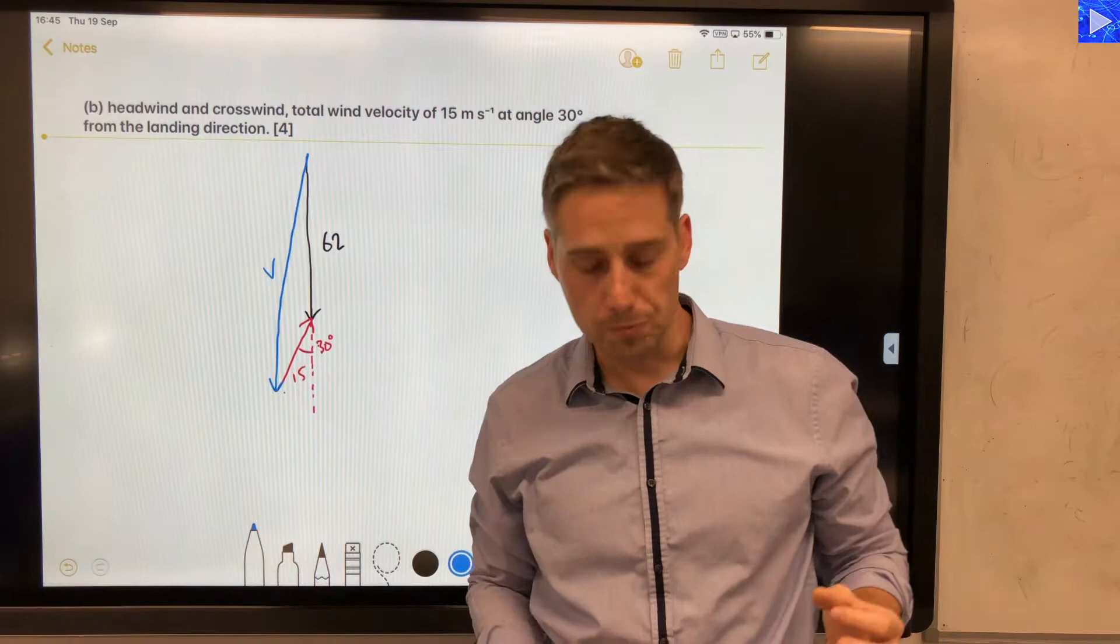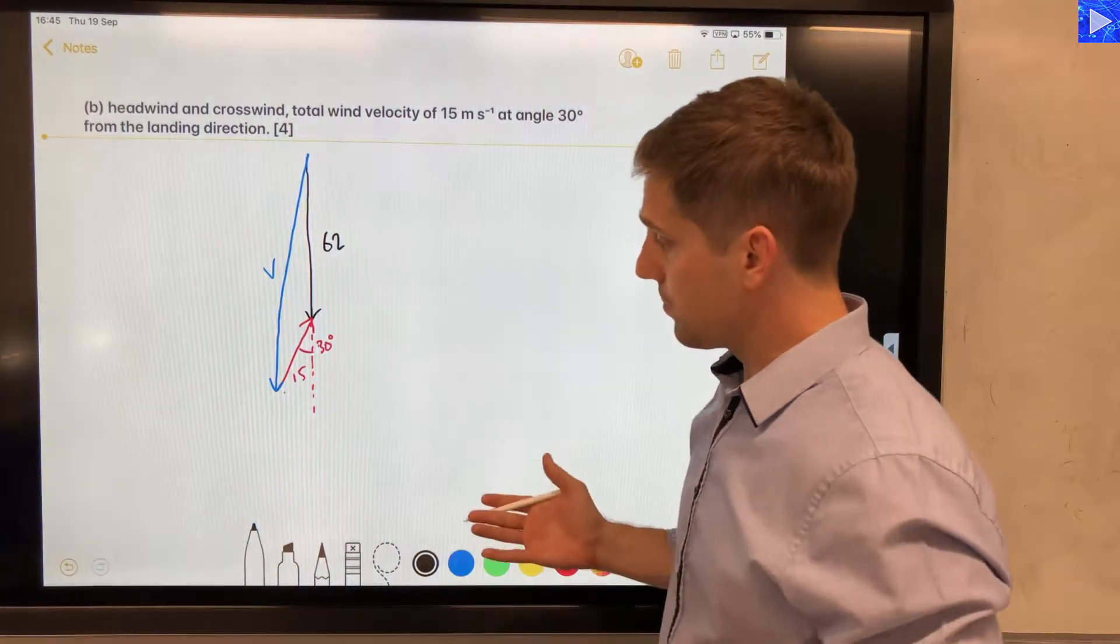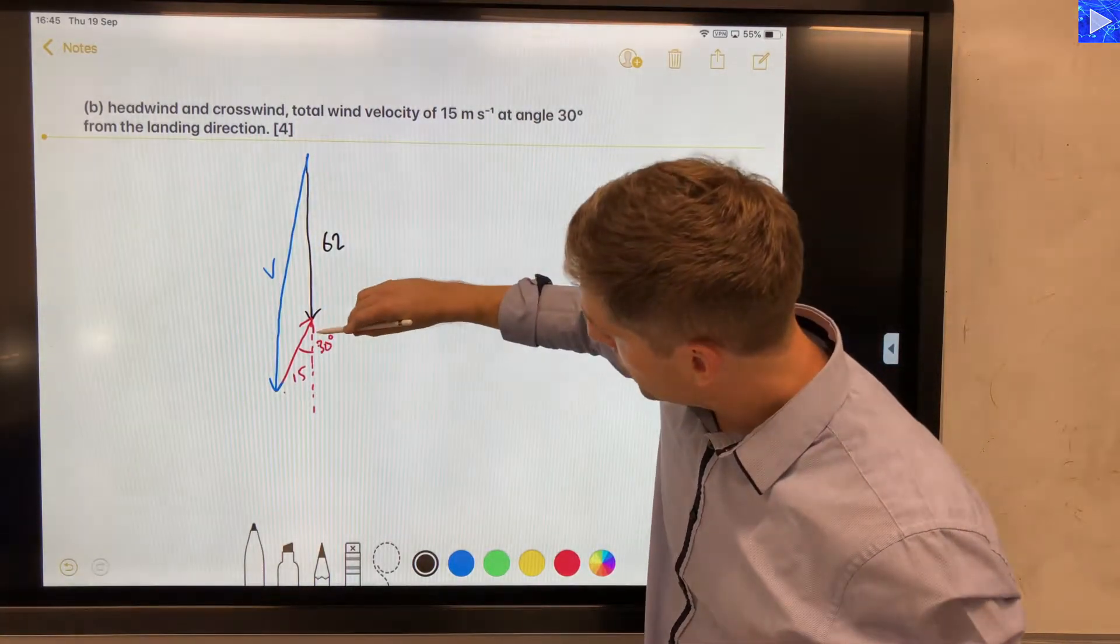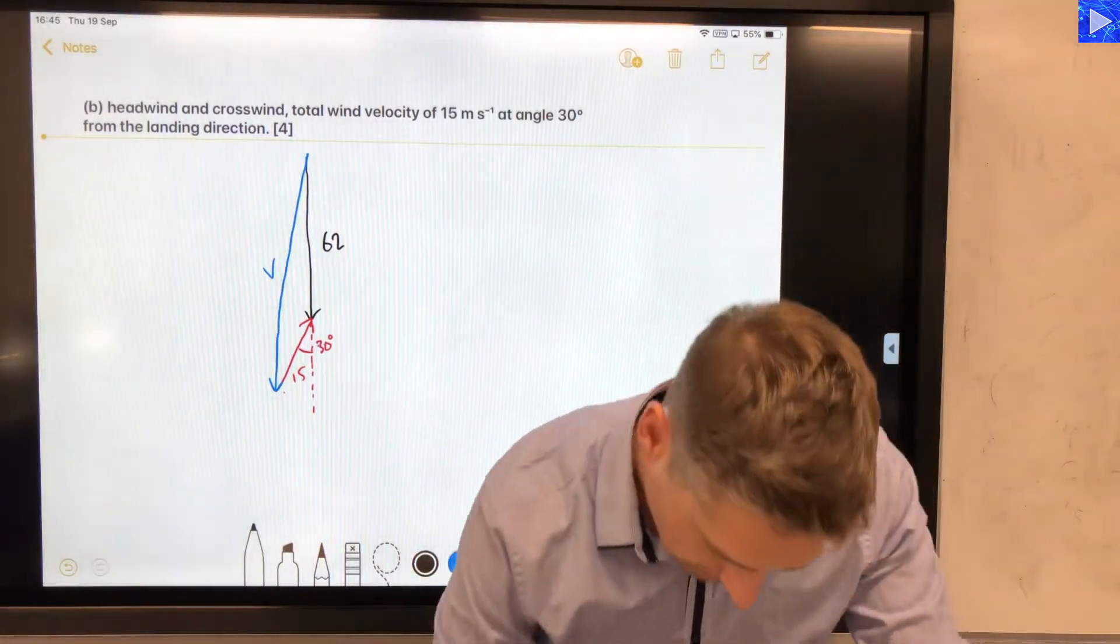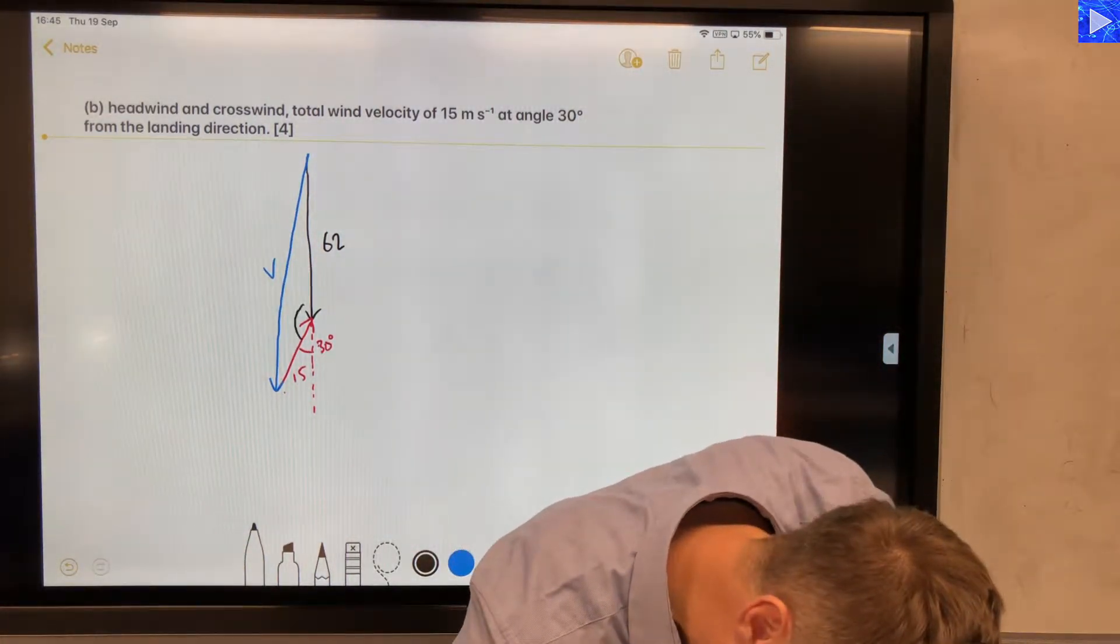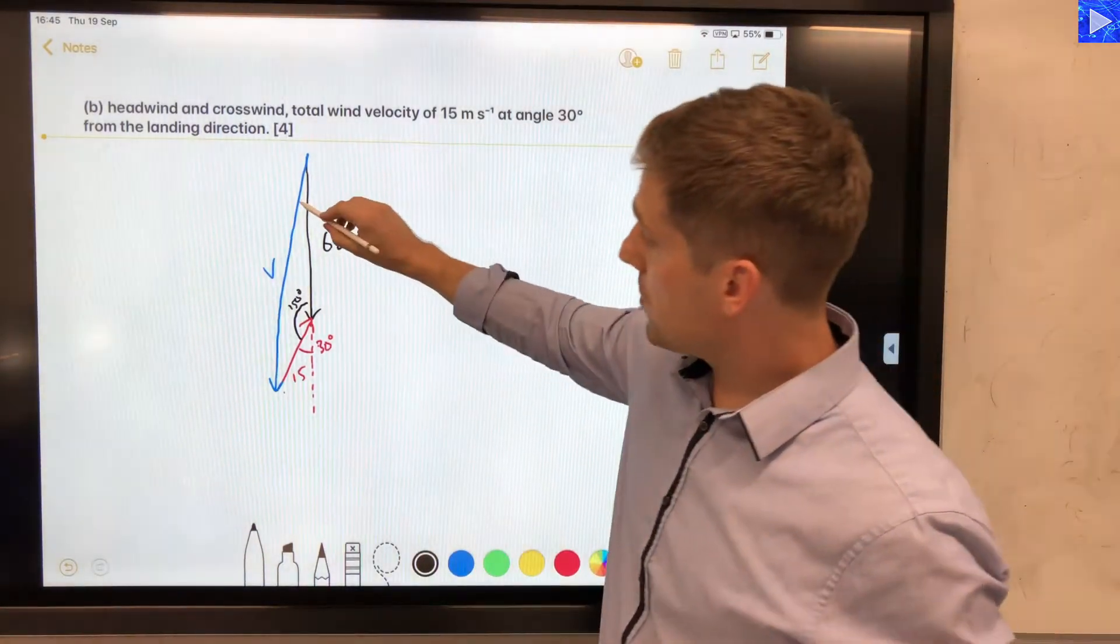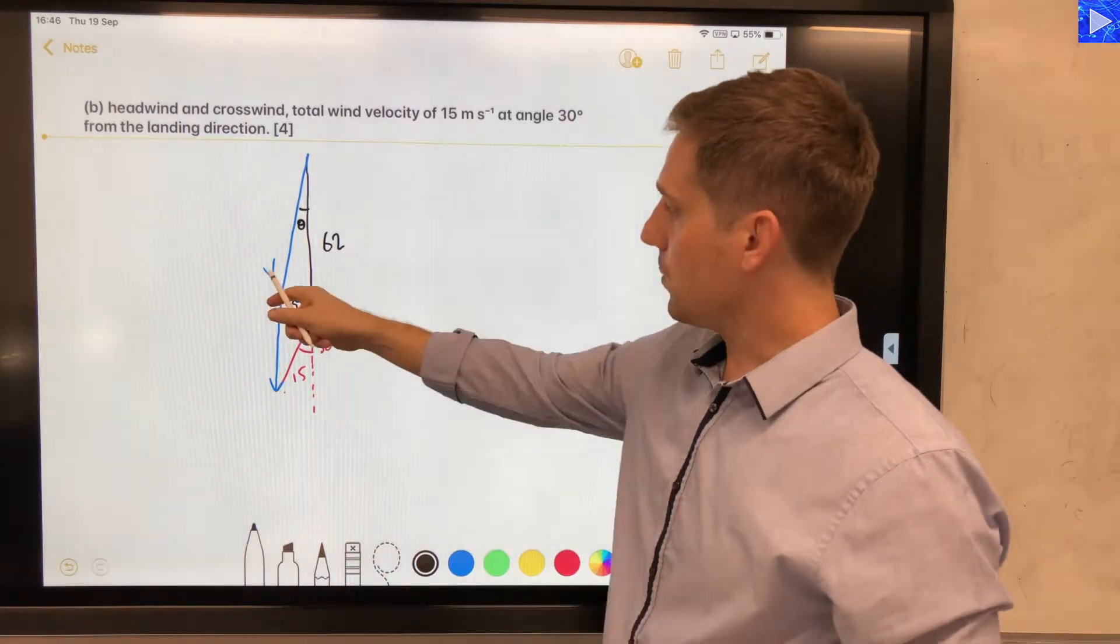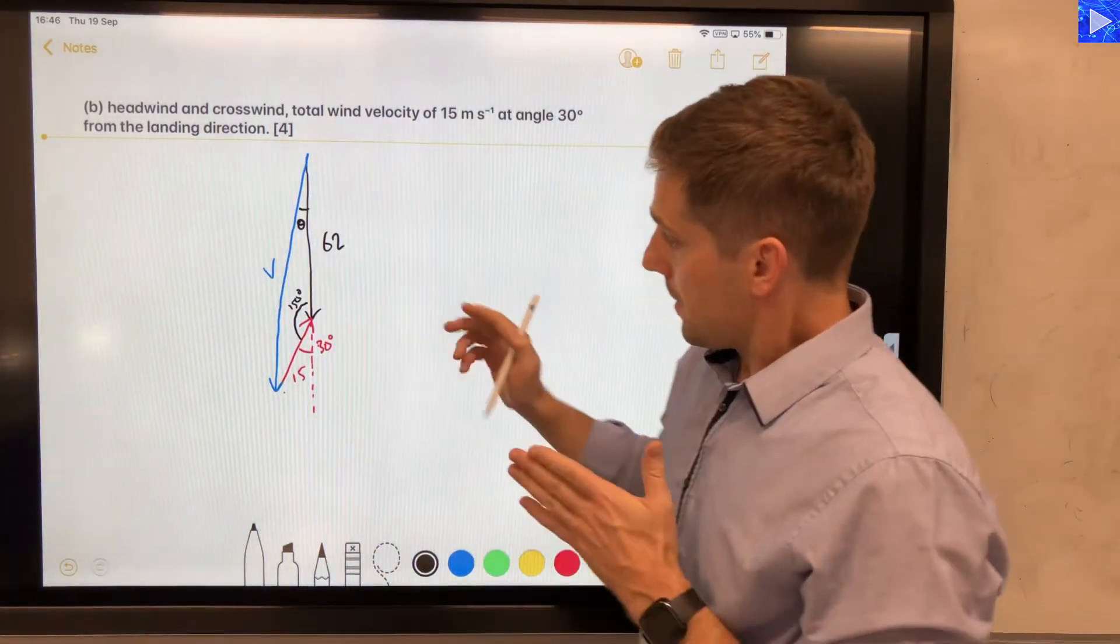And you'll notice this is not a right angle triangle. So tools that are available to us to solve this problem: well, we know this angle here, 30, and we know this is a straight line, so this angle here is 150. Let's write that in there. That's a known angle, 150 degrees. The angle we want to know is here, so I'm going to write that as theta.